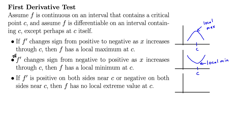The third part says if f prime is positive on both sides near c, or negative on both sides near c, then f has no local extreme value at c. So that might look something like this — our point c here, and maybe we go up and then level off at c and then keep going up. We have a derivative of zero at this critical point, but the function is increasing and increasing on both sides, so there's no local max or min.